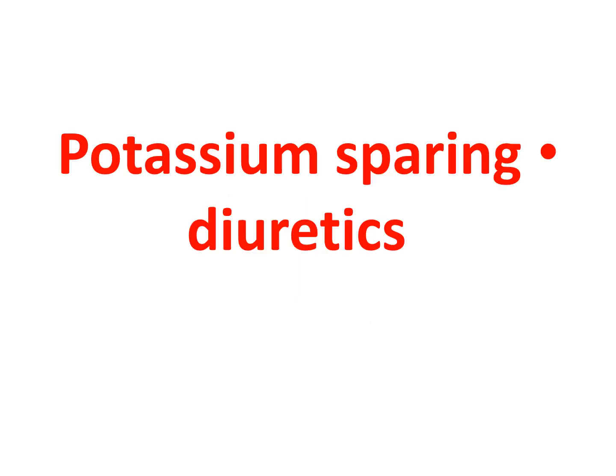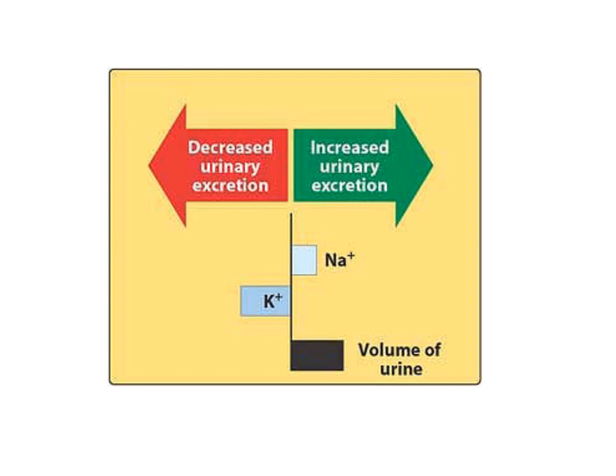The next group is the potassium-sparing diuretics, subdivided into aldosterone antagonists like spironolactone, and sodium channel blockers like triamterene and amiloride. Their effect on urinary electrolyte concentration shows they decrease urinary excretion of potassium — hence called potassium-sparing — while increasing excretion of sodium, with a moderate effect on urine volume compared to the more potent loop diuretics.